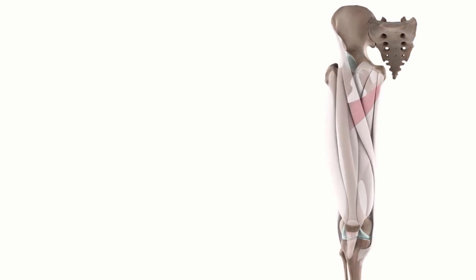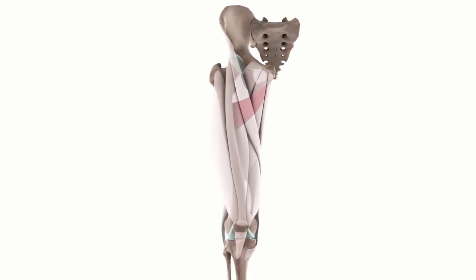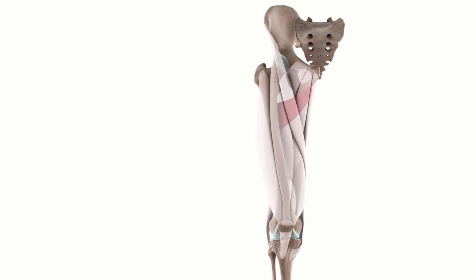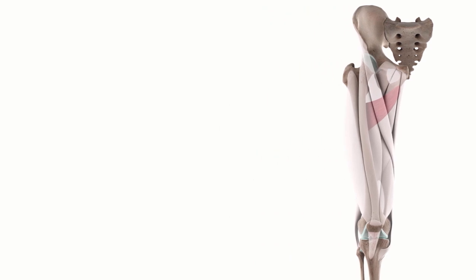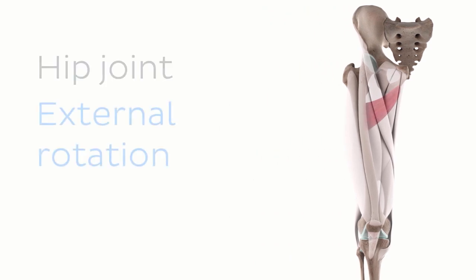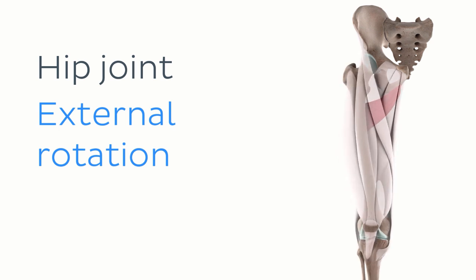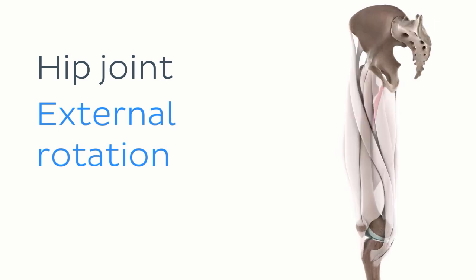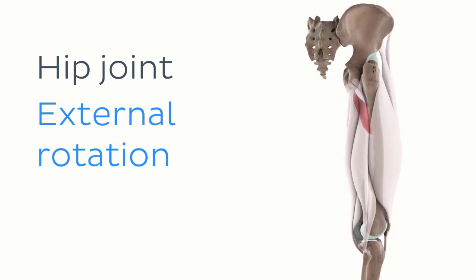In addition to adduction of the thigh, the adductor minimus also facilitates another movement of the hip joint. It also acts upon the hip joint to externally rotate the thigh. As you can see here, this movement is basically the rotation of the thigh laterally or away from the midline of the body.